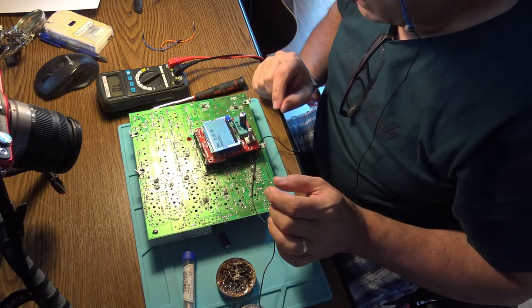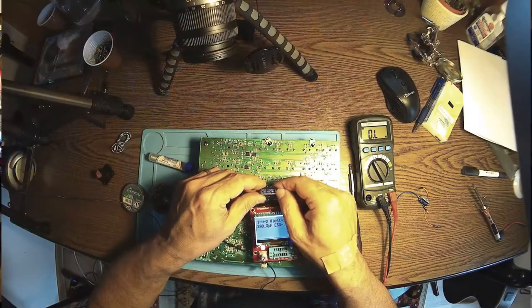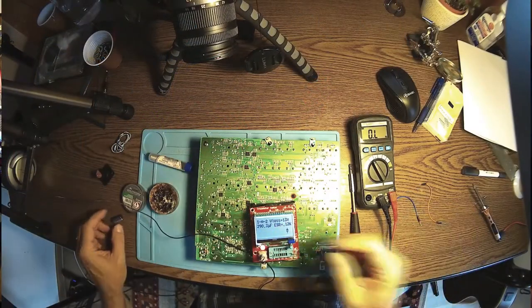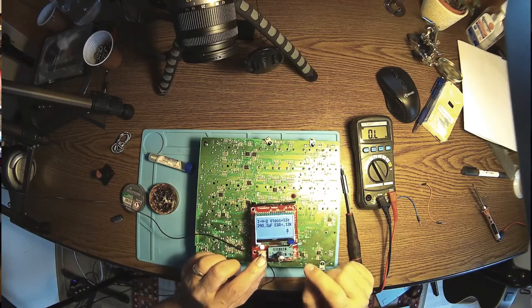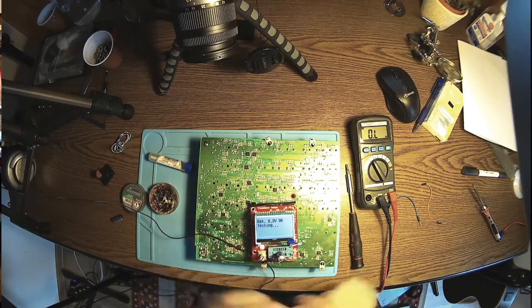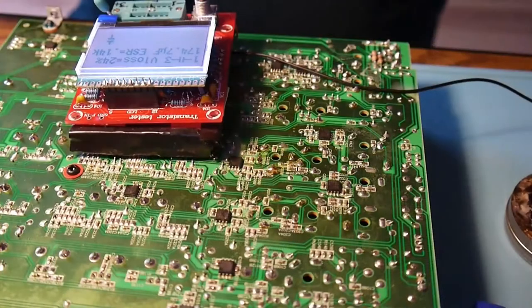This should be 1000 microfarads but it shows me 290. And look at the ESR - 0.12, 120 ohms. They are absolutely ruined. Let me find two replacement electrolytic capacitors.